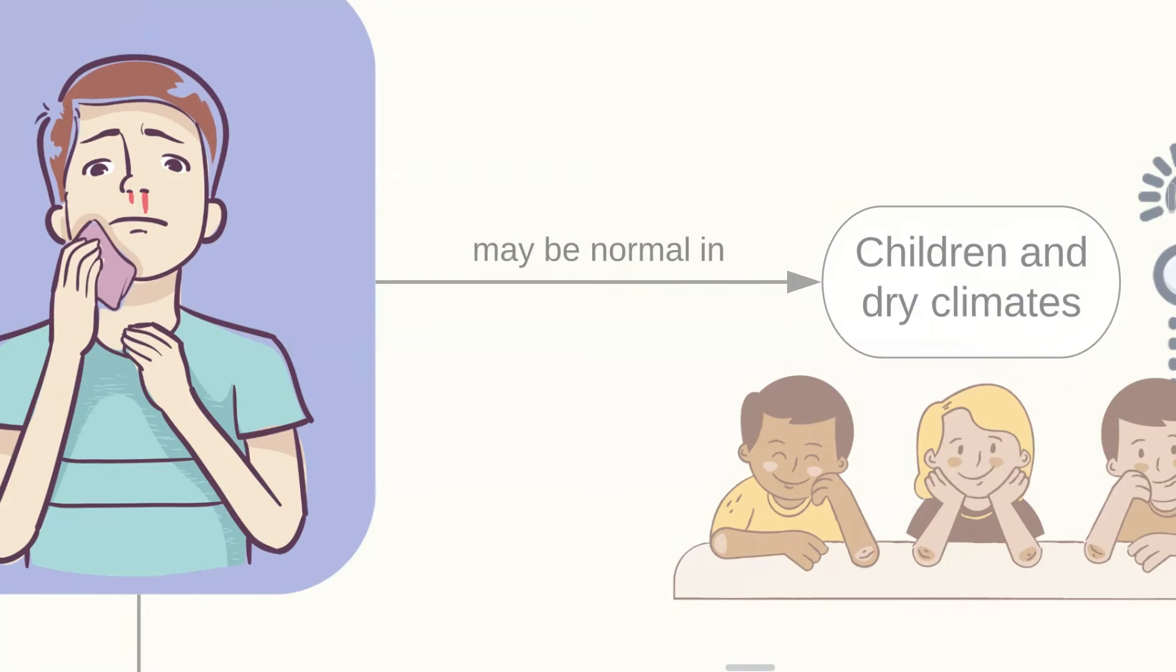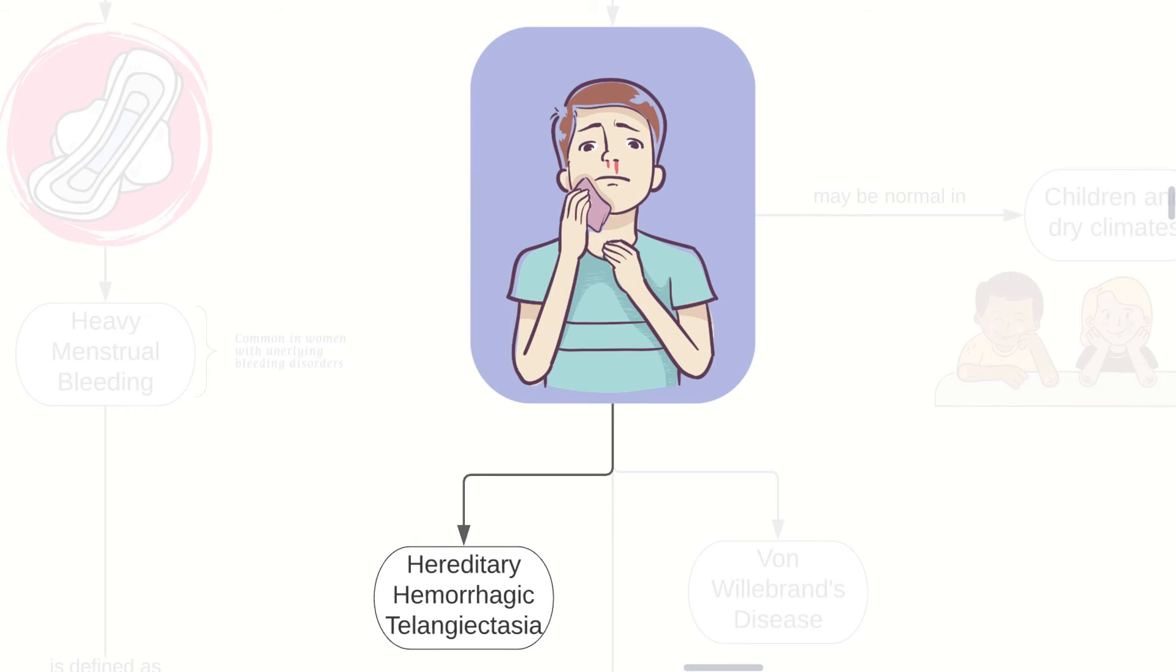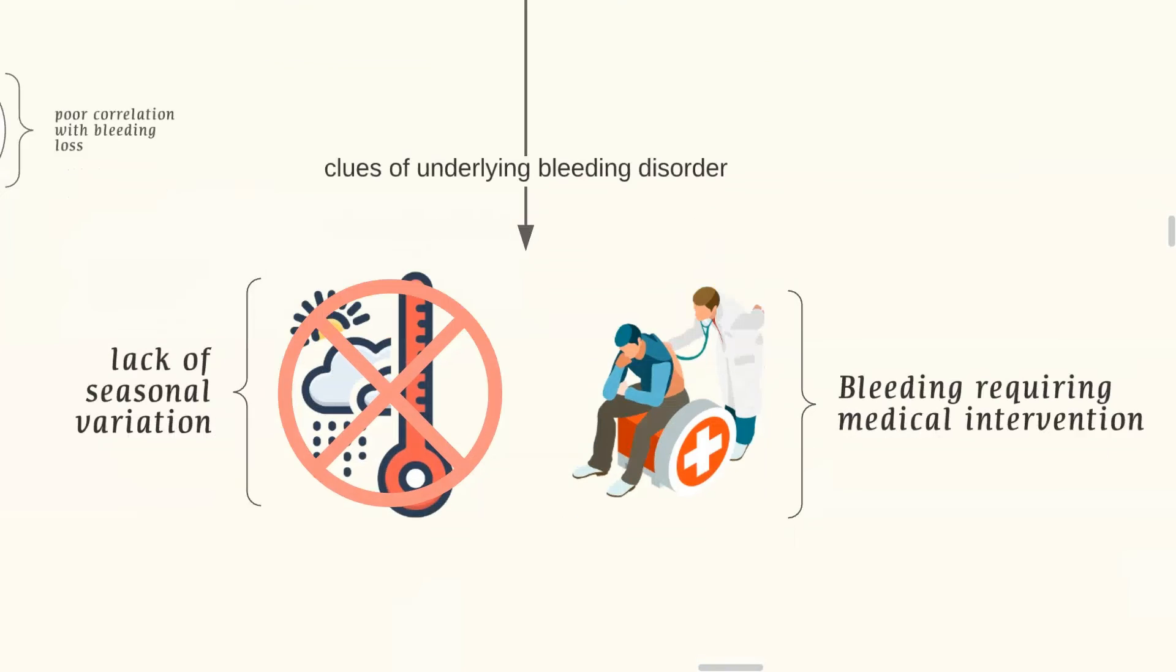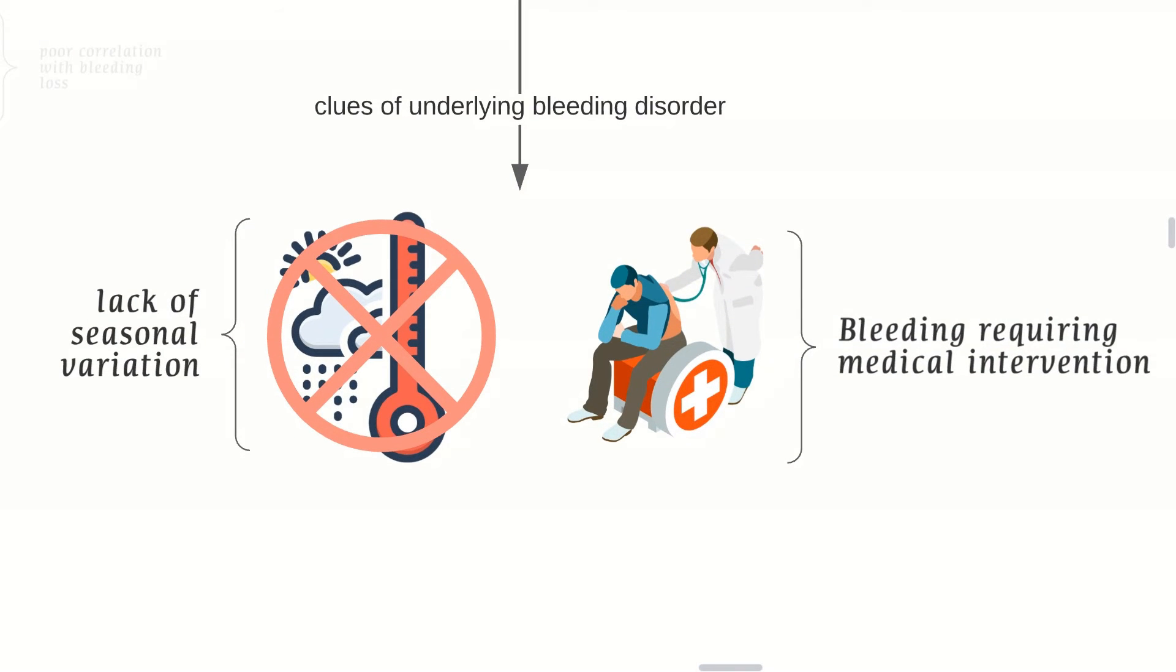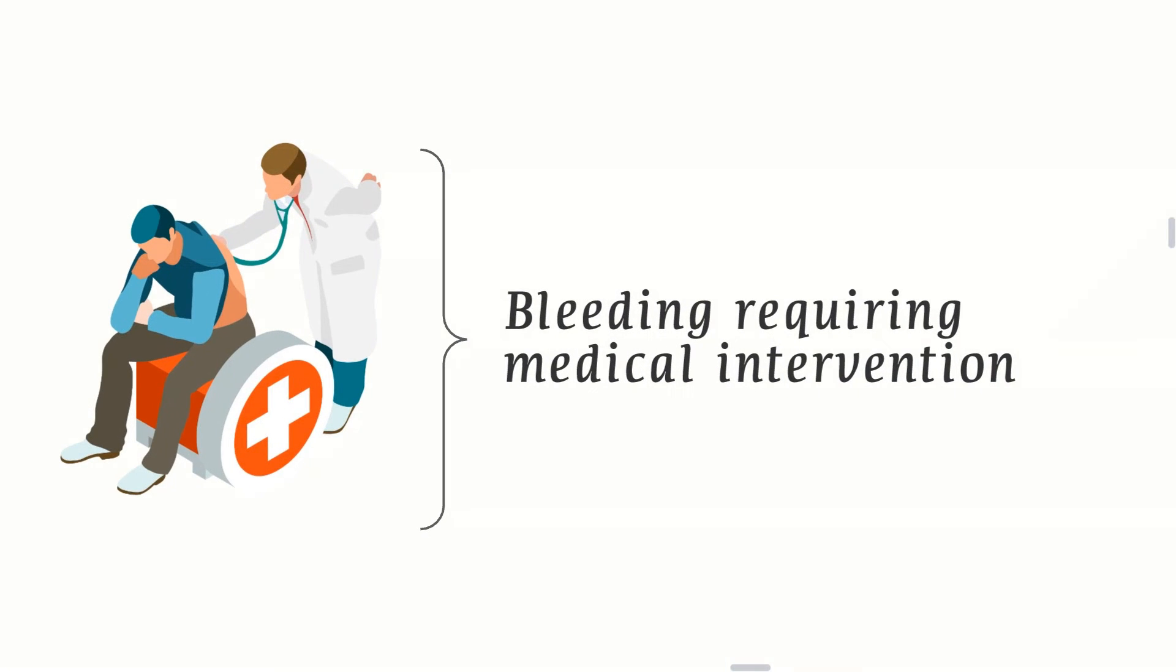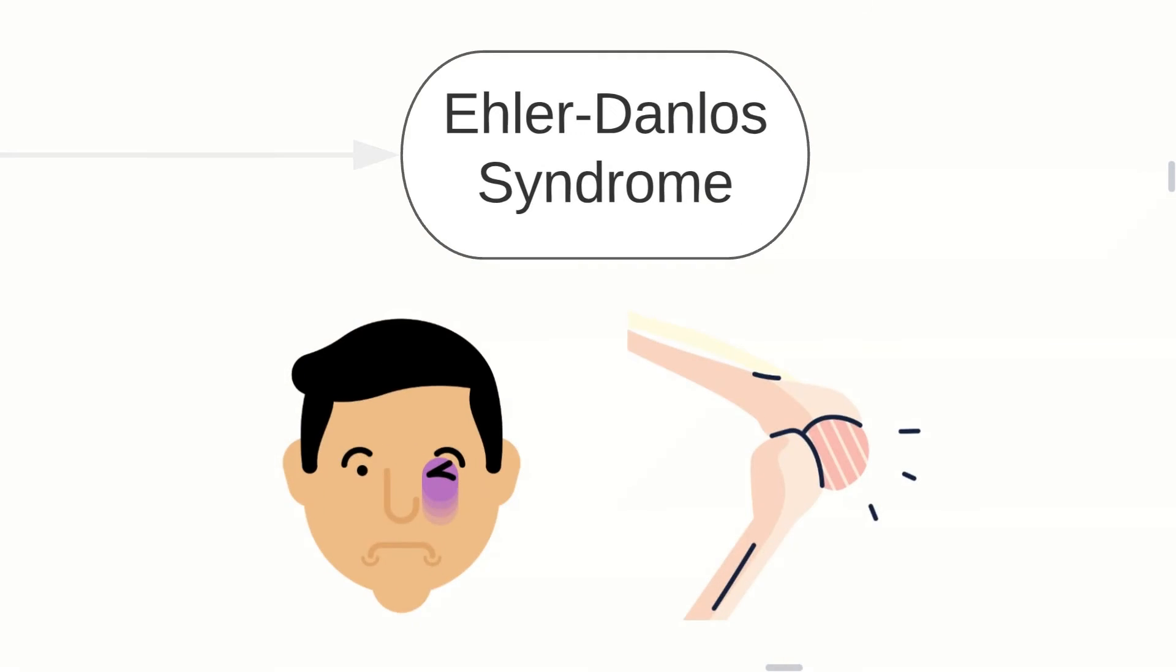Epistaxis may be normal in children and in dry climates. But this may also be a sign of hereditary hemorrhagic telangiectasia or von Willebrand's disease. So there are clues of underlying bleeding disorders such as a lack of seasonal variation or bleeding that requires medical intervention.